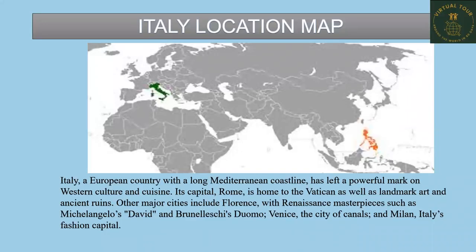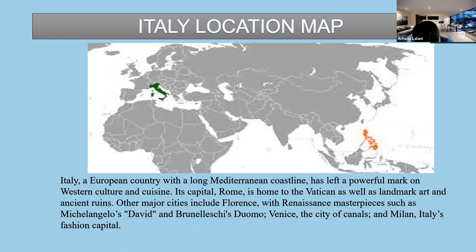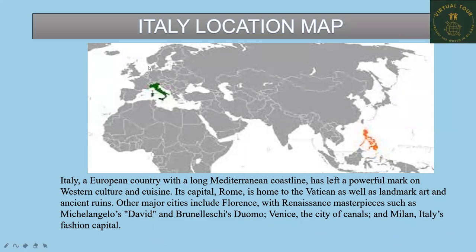Here you can see the image of the world map. The green highlighted area is actually Italy. It is a European country which lies along the Mediterranean coastline.